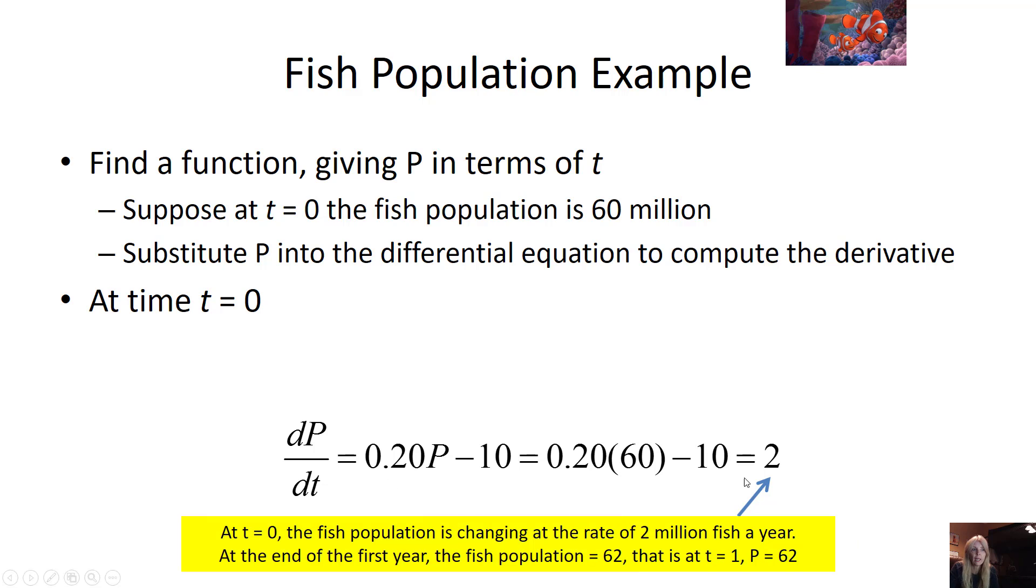Well, this is a rate. So at the very beginning of time, time equals 0, the fish population is changing at a rate of 2 million fish per year.